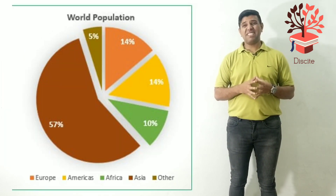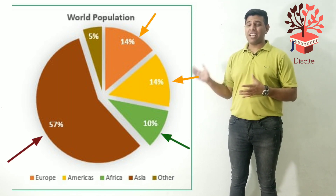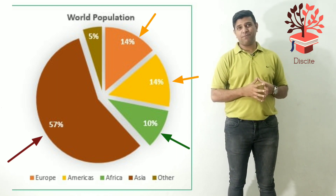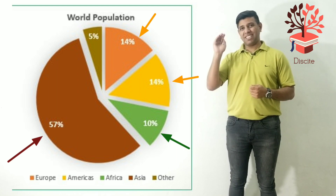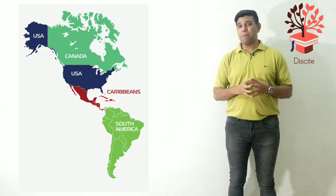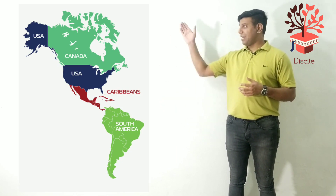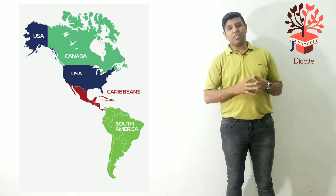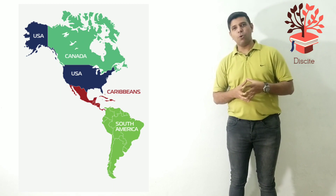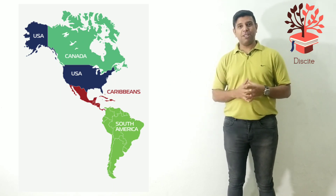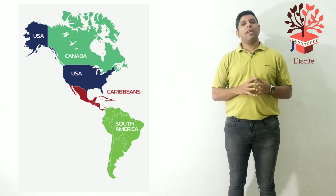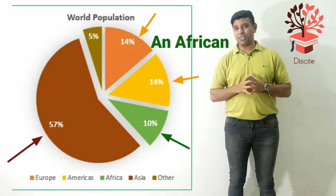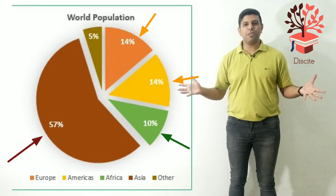Now look at the world population. 57% of the population of the world lives in Asia — more than half. You can say more than half of the population resides in Asia at 57%. Look at Europe and Americas — both at 14%. When we say Americas, we mean South America and North America, so countries like Brazil, Argentina, Chile, Ecuador, Uruguay, Paraguay, Guatemala — both the Americas. Then Africa at 10%, which is one tenth. So every tenth person in the world calls Africa their home.